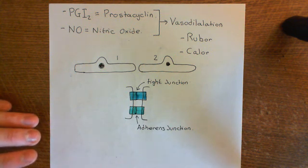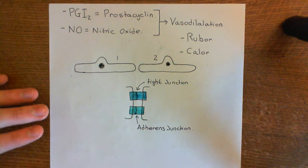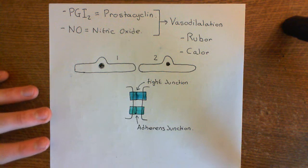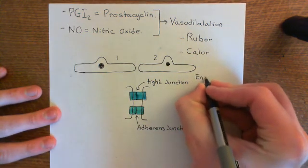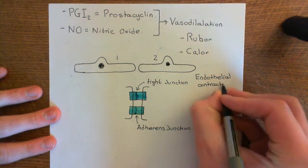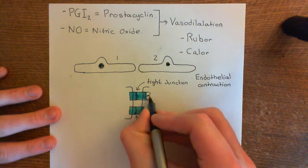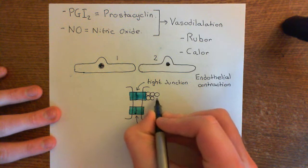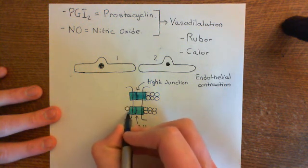Now, when the endothelial cells undergo type 1 activation, we're going to open up gaps between the endothelial cells so that things within the blood can start to leak out into the interstitial fluid, because we want to move troops from the bloodstream into the interstitial fluid. In the capillaries and the postcapillary venules, you're going to open up gaps between the endothelial cells. This is done by a process known as endothelial contraction, which is activated by type 1 activation.